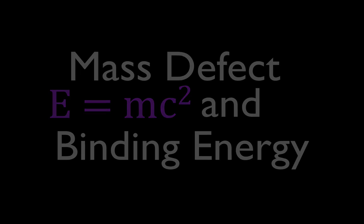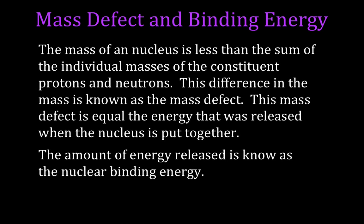Let's start with a couple of definitions. The mass defect comes from the fact that the mass of a nucleus — the combined protons and neutrons — is less than the mass of the individual constituent protons and neutrons. So we add up the mass before, add up the mass after, and the difference between those two is the mass defect.